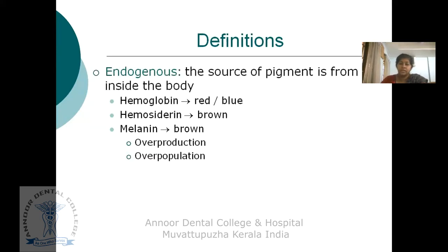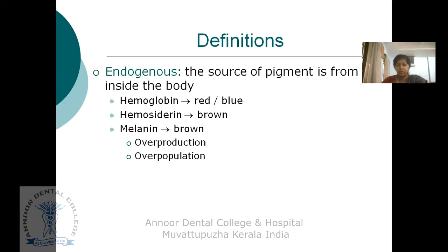What are endogenous pigmentations? When the source of the pigment is from inside the body, we call it endogenous pigmentation. The endogenous pigments include hemoglobin, which can cause red or blue pigmentation; hemosiderin, which is brown in color; and melanin, which is brown or black depending upon the amount of melanin pigment, which may depend upon overproduction or overpopulation of melanin.